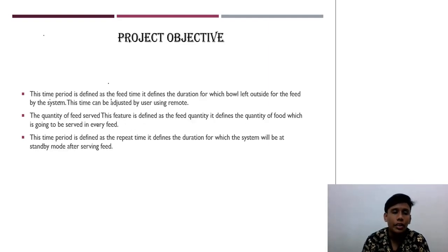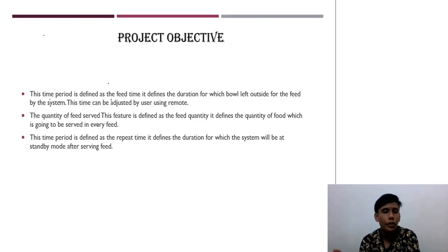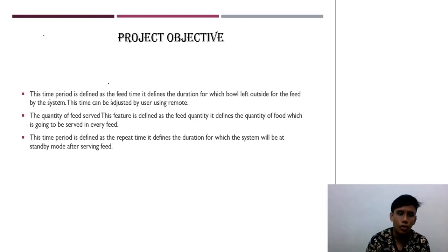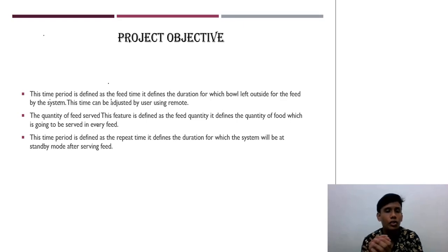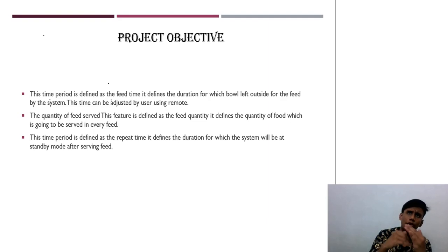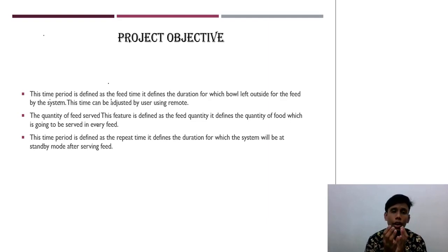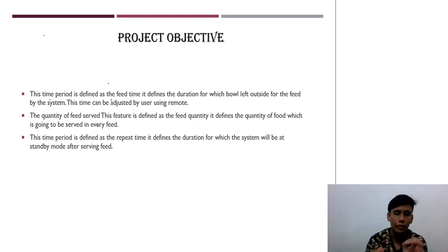Project objective. This time period is defined as the feed time — it defines the duration for which the bowl is left outside for feeding by the system. This time can be adjusted by the user using a remote or cell phone application. The quantity of feed served is defined as the feed quantity — it defines the quantity of food which is going to be served in every feed. The owner can control both the timing and the amount of food to provide for their animal using the phone application.